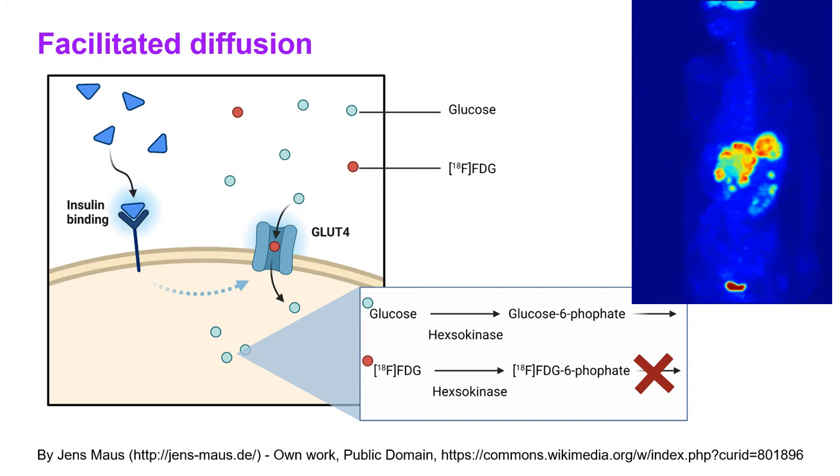The next mechanism is facilitated diffusion. So there must be some transporter involved. So there is still no energy involved but there is now a transporter that takes the molecule over the cellular membrane and our radioactive sugar molecule FDG is a classic example of this. It gets transported over by facilitated diffusion with the GLUT 1 or 4 transporter and then inside it undergoes metabolism to fix it in the cell and then you can image it.